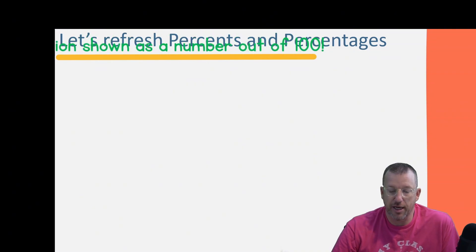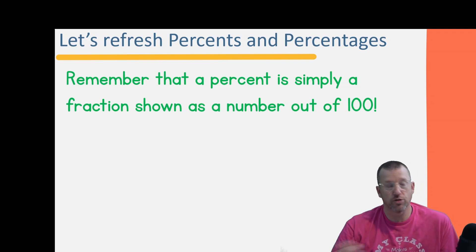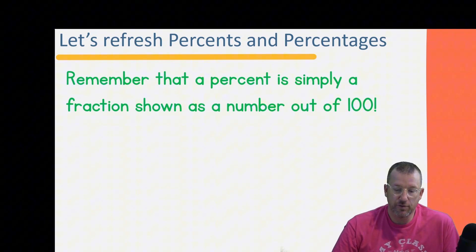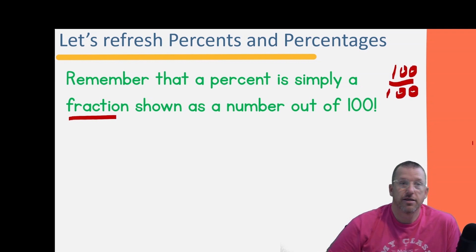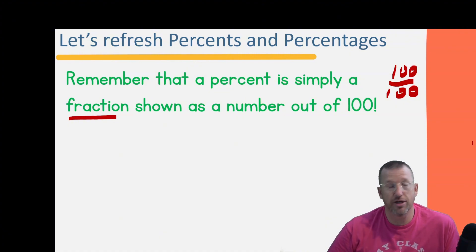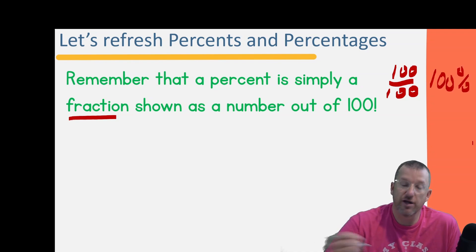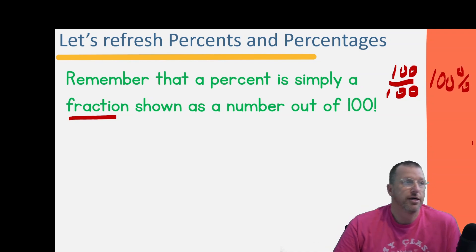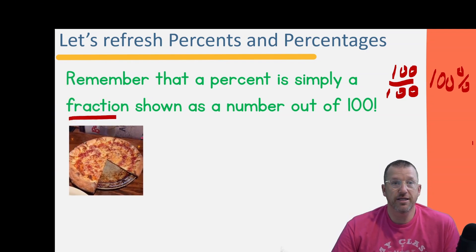Let's refresh a little about percents. A percent is simply a fraction shown as a number out of 100. One hundred out of one hundred is a whole — that's everything. So if I ate 100 M&Ms out of a bowl that had 100 M&Ms, I ate the whole thing. One hundred percent is the whole.